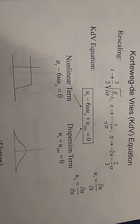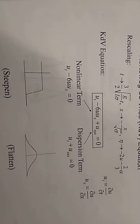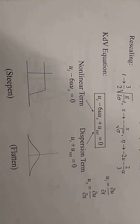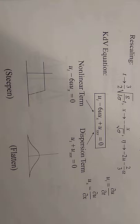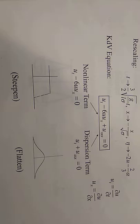u_t equals curl u over curl T and u_x equals curl u over curl X, the partial derivatives with respect to T and X. We can see u_t minus 6u u_x equals zero is the nonlinear term, while u_t plus u_xxx equals zero is the dispersion term. The nonlinear term steepens as in figure, and the dispersion term flattens as in figure.